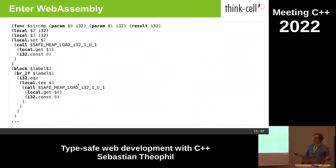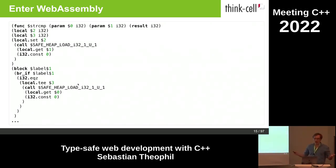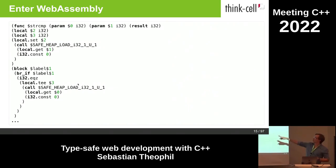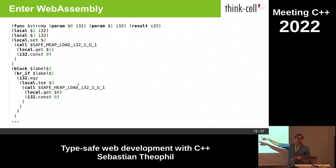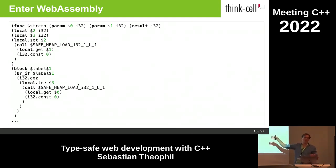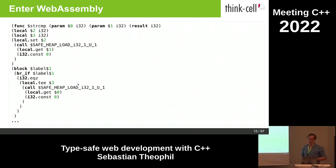WebAssembly also has a standardized text format, which is handy if you want to look at the raw source code — essentially the assembly format for WebAssembly. Here you can probably guess this is the beginning of the WebAssembly code for the C string compare function: it takes two integers as arguments, which are pointers to zero-terminated strings, and returns an integer: minus one, zero, or one.